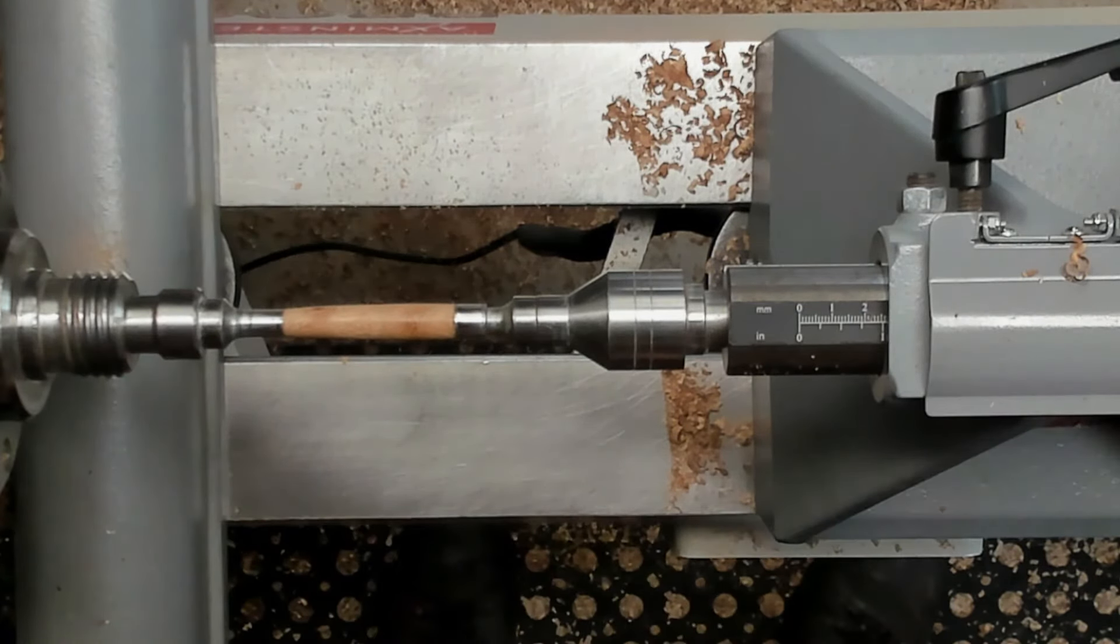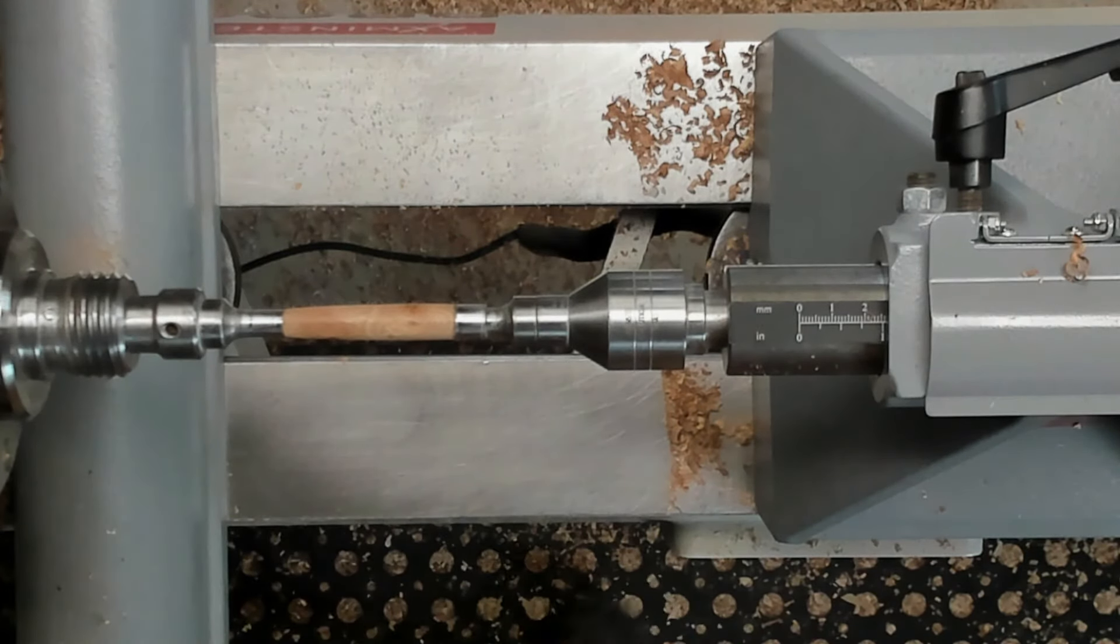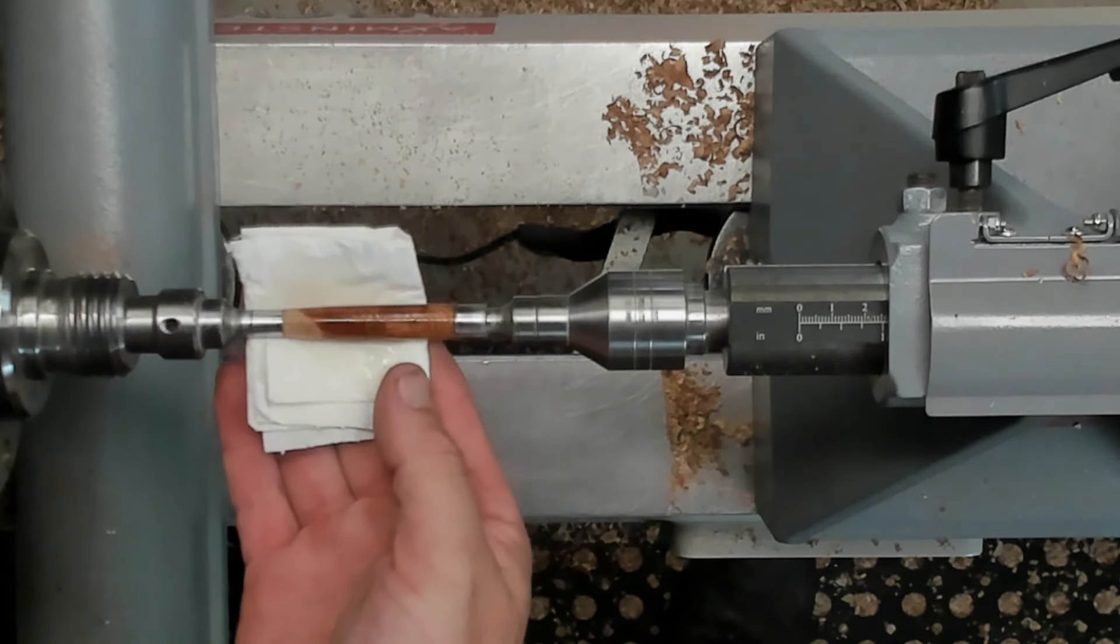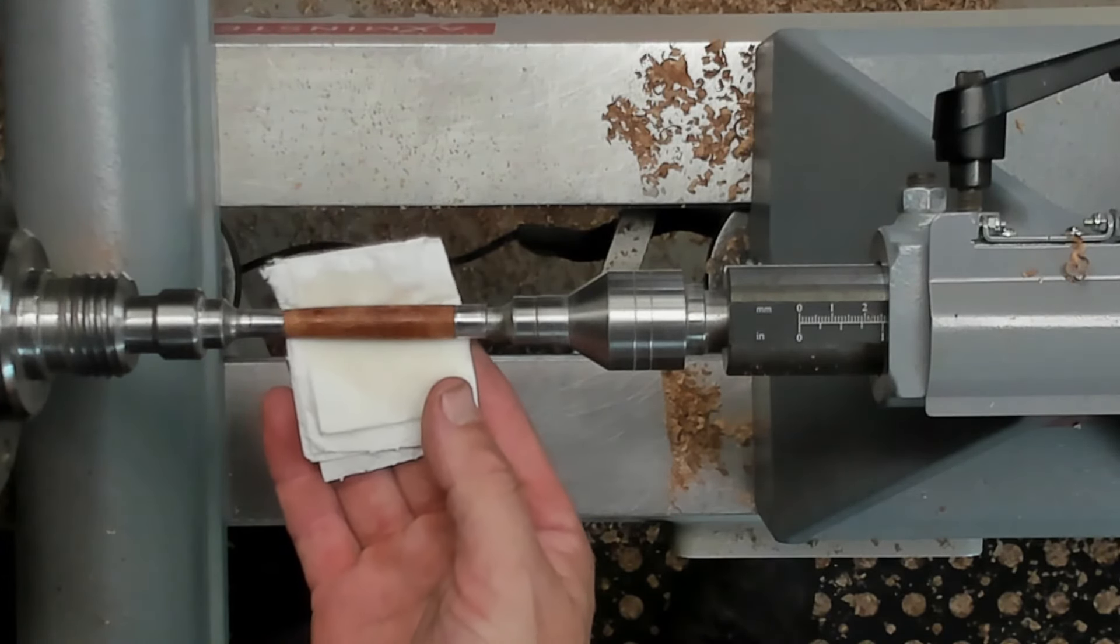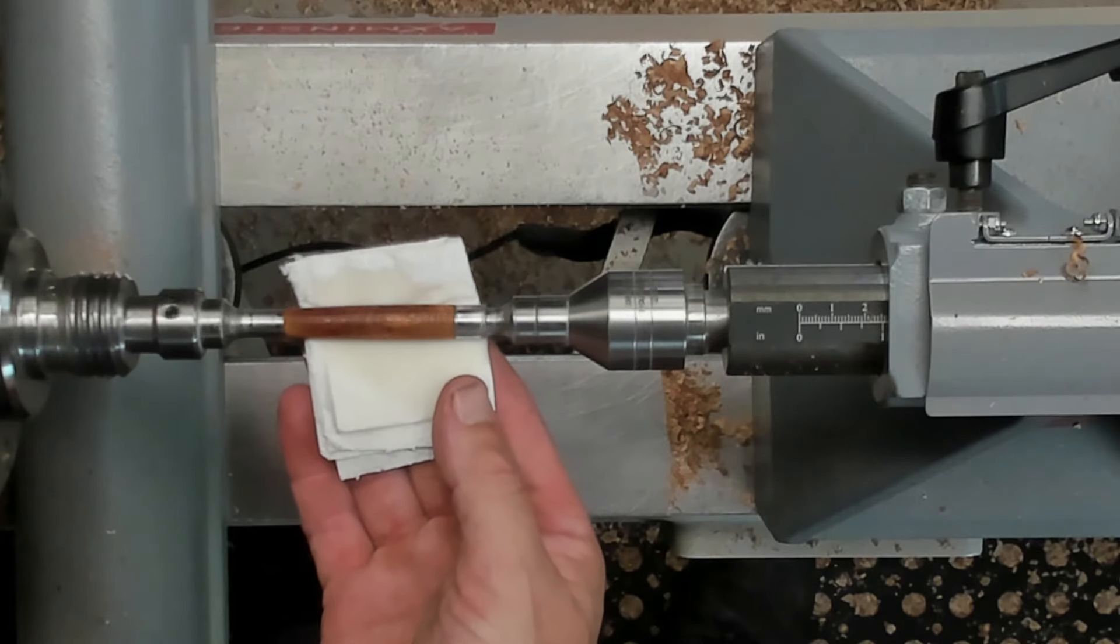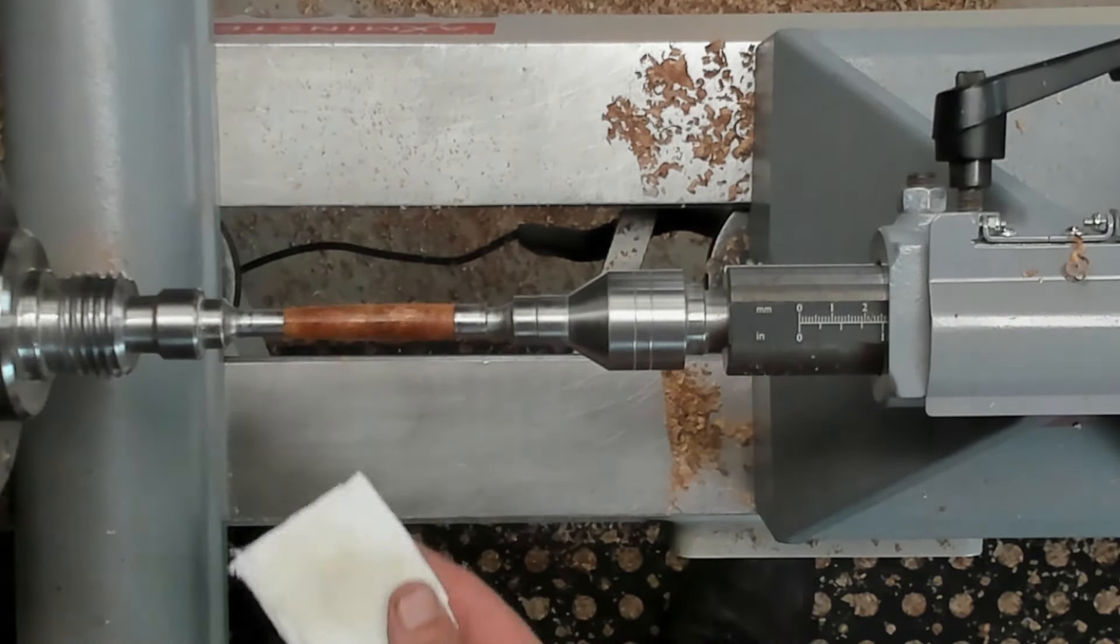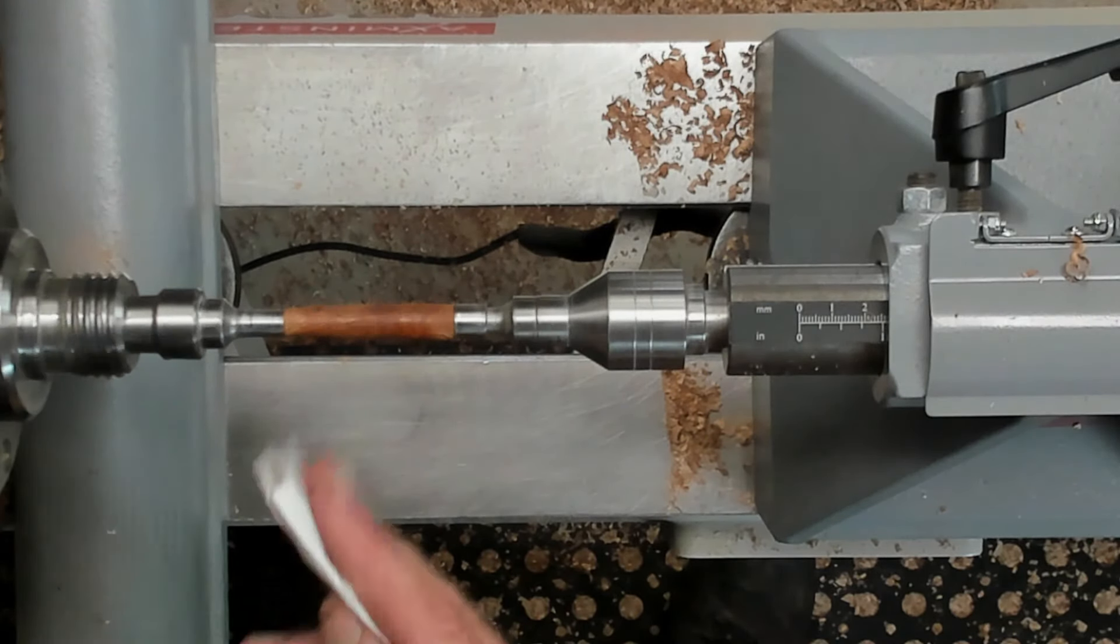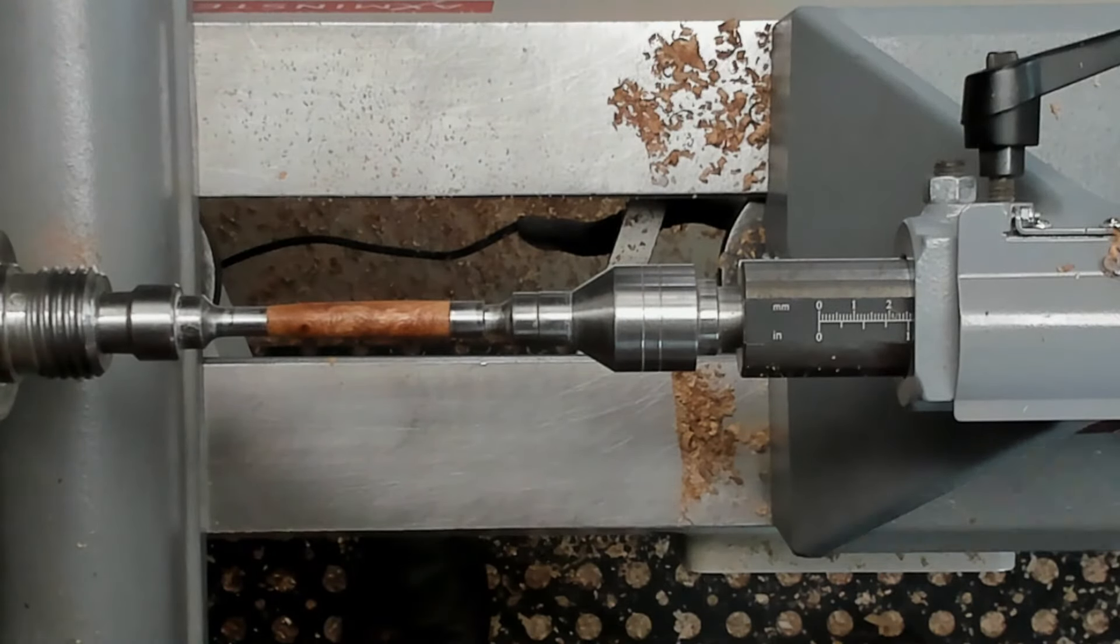Now I'm just going to sand - I was going to say sand with the grain but the grain is all over the place in this because of swirls and knots - but we'll just go this way, just to take off any radial lines that the sandpaper has put in it. Now that's the 320, I'm going to use a bit of 400 next. There was a little bit of burning on.